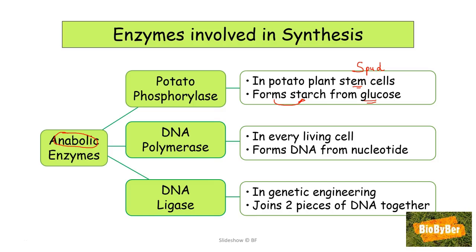Of course the potato plant needs chemical reactions where glucose is converted into starch, because starch is a storage carbohydrate in plants and potato stem cells are full of starch. DNA polymerase is another anabolic enzyme — a polymer is a long chain, a complicated chemical. DNA polymerase is an enzyme involved in synthesis, making a long chain. This anabolic enzyme is found in every living cell and forms DNA from nucleotides.